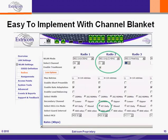Creating a pure N blanket is very easy to implement in the channel blanket architecture, as you can see from the switch configuration GUI in this slide. Radio 2 is running a 40 MHz channel blanket in the 2.4 GHz band in 802.11n HT Mode — that's the column circled in green — and you can see that HT Mode has been activated. Radio 3 uses the remaining 2.4 GHz spectrum to provide a 20 MHz channel blanket for legacy BG users.